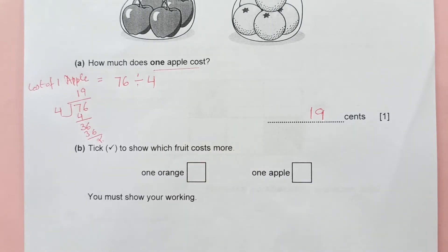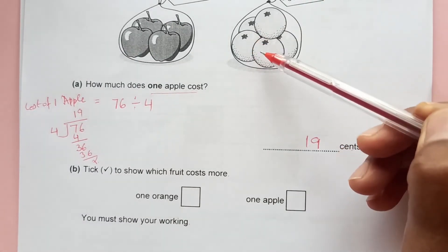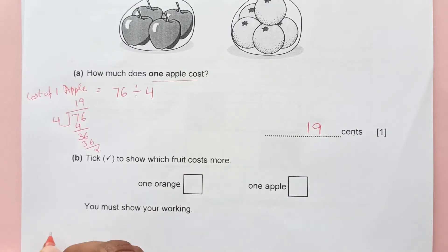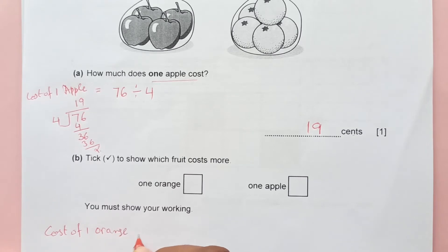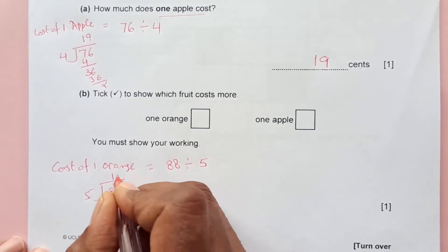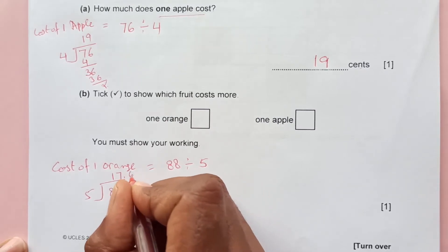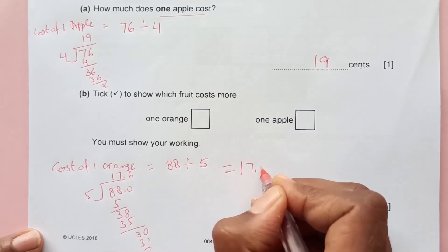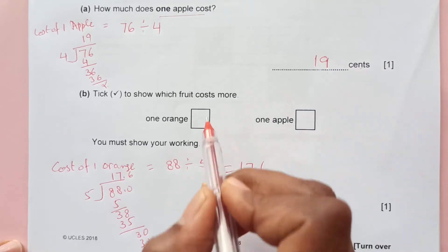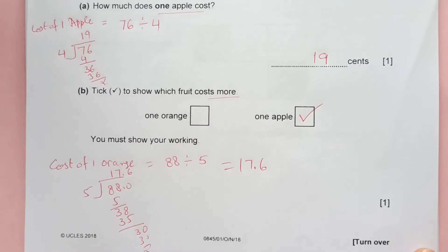We already have one apple at 19 cents. For the oranges, there are 5 oranges costing 88 cents. So 88 divided by 5: 5 times 17 is 85, remainder 3, giving 17.6 cents per orange. Comparing: one apple is 19 cents and one orange is 17.6 cents, so the apple costs more.